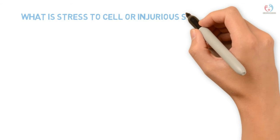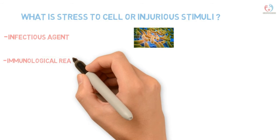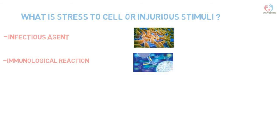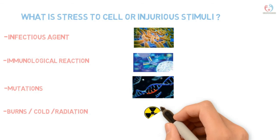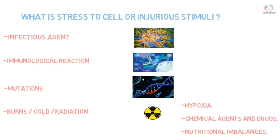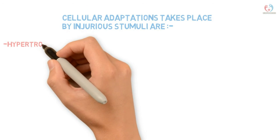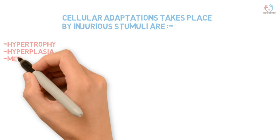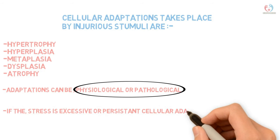Injury stimuli include any infectious agent such as bacterial, viral, or fungal infections. Immunological reactions are also a kind of stress to the cell, causing cellular damage or hemolysis. Other stimuli include mutations — acquired or congenital — burns, cold, radiation, hypoxia, chemical agents and drugs, and certain hormonal imbalances, which predispose to hypertrophy and hyperplasia. Cellular adaptations can be physiological or pathological, and if stress is excessive or persistent, adaptations can turn into cellular injuries.